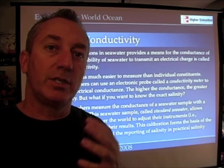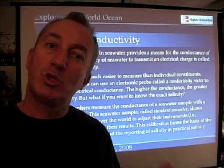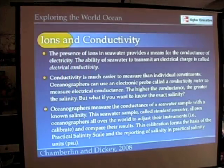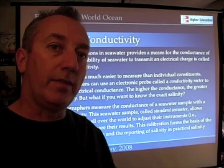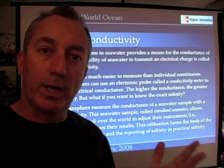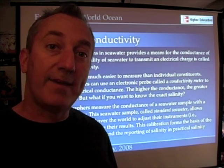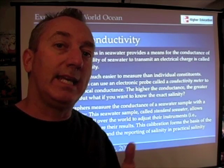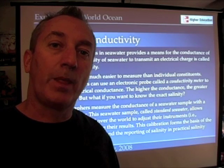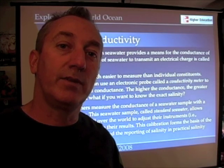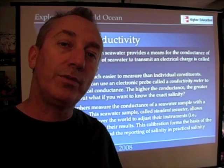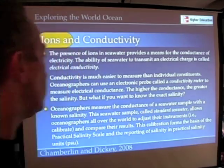Just like a battery has a positive and negative charge that lets a current run through it, the ocean with its negative and positive charges lets an electrical current run through it. This property we call electrical conductivity. The more salts in seawater, the greater the current. Fresh water would have the lowest current because it doesn't have many salts. As we add more salts, we get increases in electrical conductivity. This property revolutionized chemical oceanography because it allowed oceanographers to measure the salinity of the ocean with an instrument that measures electrical conductivity.